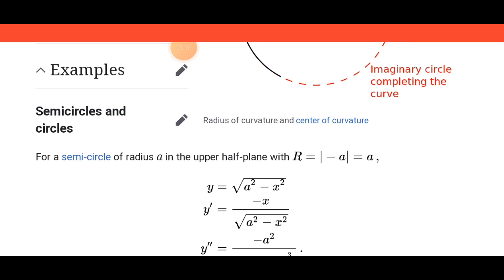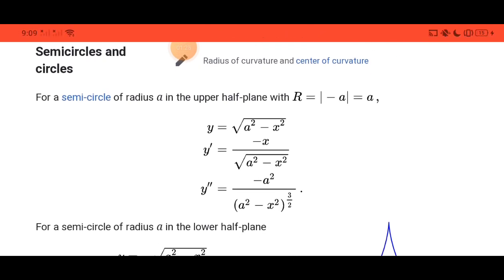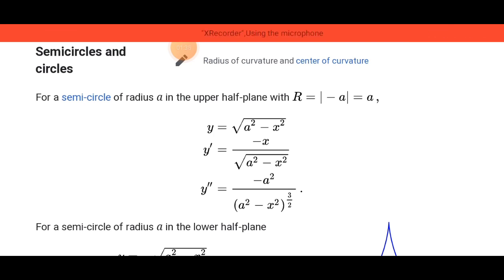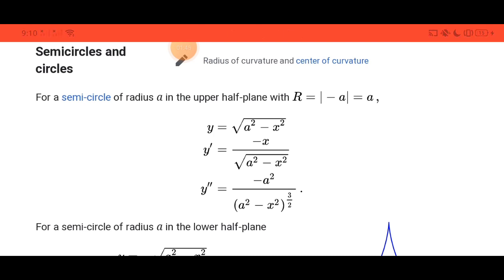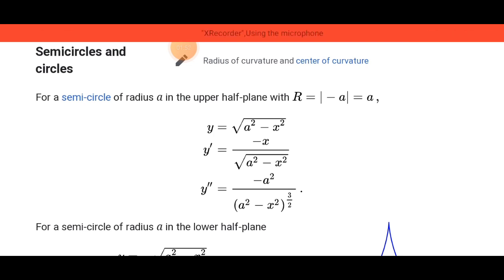With R equal to the absolute value of negative a, which equals a, then y is equal to the square root of a squared minus x squared. The first derivative of y is equal to negative x over the square root of a squared minus x squared. The second derivative is equal to negative a squared over a squared minus x squared, raised to the 3/2 power.